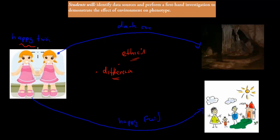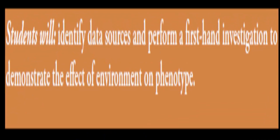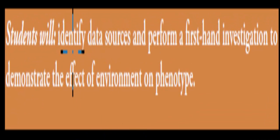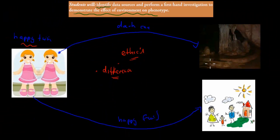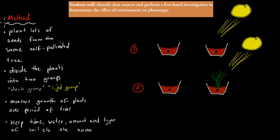But we can do something to test the effect of the environment on our appearance or our intelligence. What we could do is we could do it with plants instead, just to see the effect of genes, environment, and phenotype. Students will identify data sources and perform a first-hand investigation to demonstrate the effect of the environment on phenotype. We need to demonstrate the effect of the environment on phenotypes, but obviously we're not going to use this example. We're going to use a different experiment.